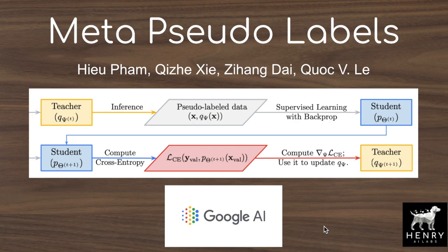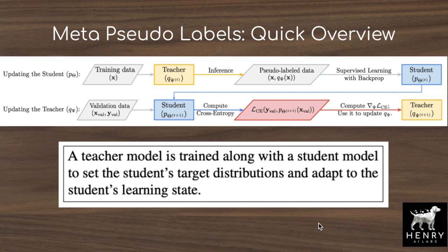MetaPseudoLabels is a new way to use meta-learning to adapt the ground truth class labels during training, using a teacher network to label data and a student network that learns from those labels. Typically, target distributions are one-hot encoded vectors — for example, zero cat, one dog, and zero for all other classes in CIFAR-10.